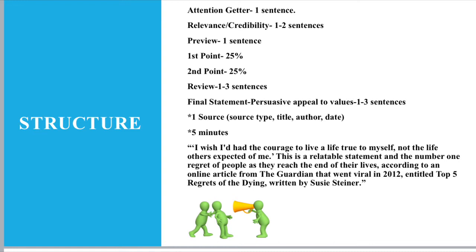Here is an example of what a sentence would sound like with all four parts of a citation included: 'I wish I'd had the courage to live a life true to myself, not the life others expected of me. This is a relatable statement and the number one regret of people as they reach the end of their lives, according to an online article from The Guardian that went viral in 2012, entitled Top 5 Regrets of the Dying, written by Susie Steiner.' You can see in those sentences I include the source type — the online article from The Guardian — the year 2012, the title Top 5 Regrets of the Dying, and the author Susie Steiner. You don't have to reveal these parts in any particular order. You could give the source first and then the information second, or the author's name first and the date last. It doesn't really matter.